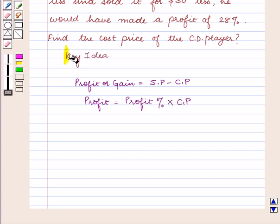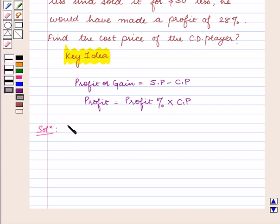With this key idea, let us proceed with the solution. First, let us suppose that the cost price of the CD player is $100.